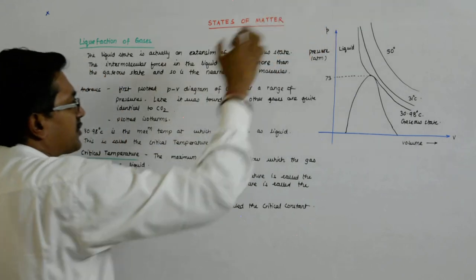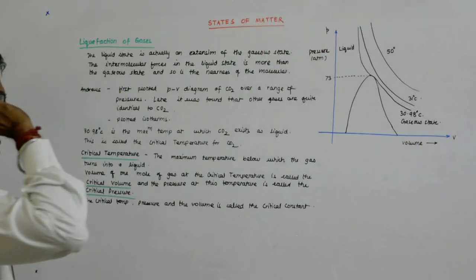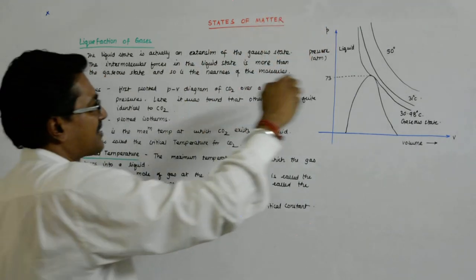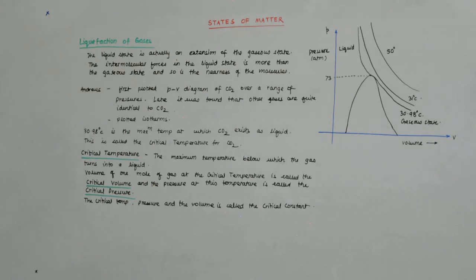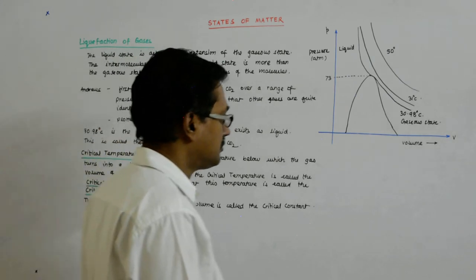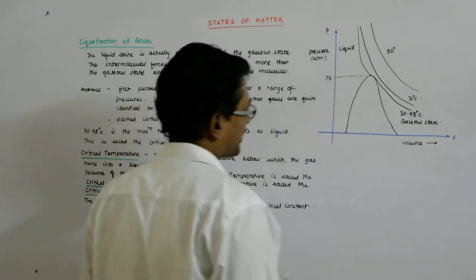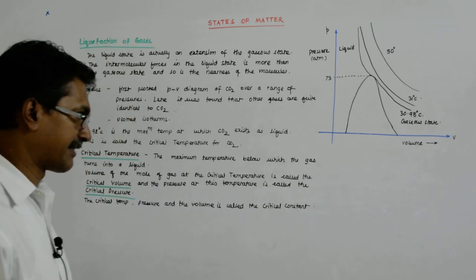Beyond this point there has been a steep rise because the gas has turned into liquid. You should understand that — the sudden change in the slope of the isotherm. Now let us come to a lower temperature, say 25.1 degrees centigrade.